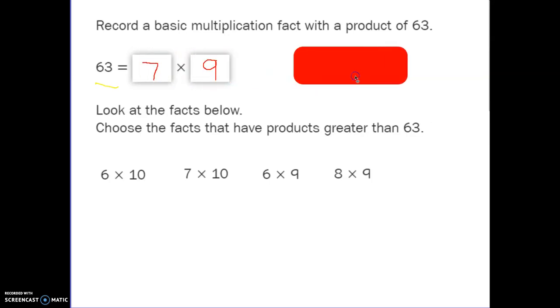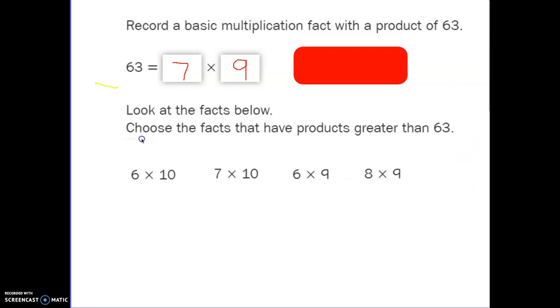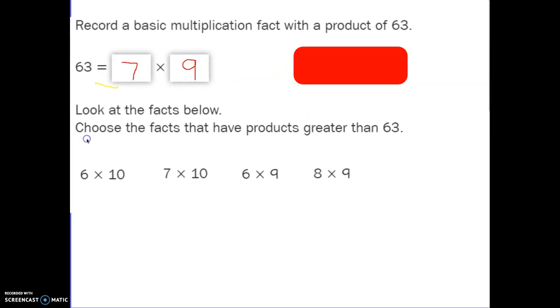7 times 9 equals 63, or maybe you had 9 times 7. Either way is correct because they are both the basic fact that gives you the product of 63. Now I have four facts below: 6 times 10, 7 times 10, 6 times 9, 8 times 9. Which facts have a product that is greater than 63?